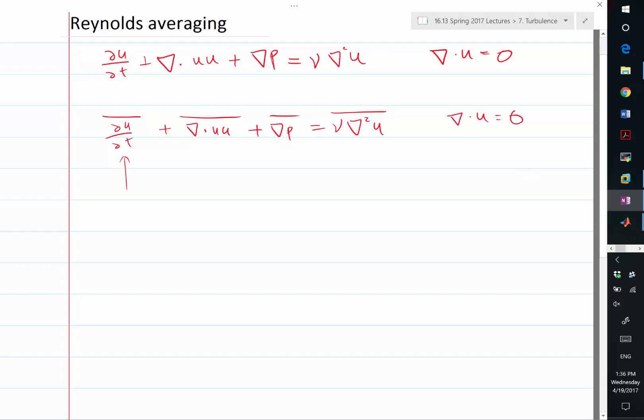So the first thing we notice is that if you average over du dt, what do you get? So if we define the averaging as t goes to infinity 1 over t of, just to use the definition, partial U partial t times dt, what is that?